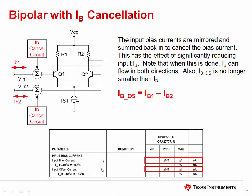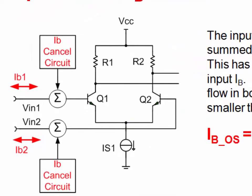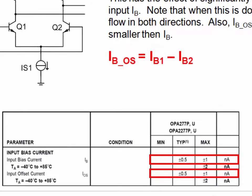Some precision bipolar op amps use a method called bias current cancellation in order to minimize bias current. This is done inside the op amp, so no external components are required. The amplifier simply behaves like a bipolar amplifier with very low bias current. Bias current cancellation is done by measuring the input bias current and summing in equal but opposite currents which cancel the bias current. This effectively takes an amplifier with hundreds of nanoamps of bias current down to single nanoamps. The OPA277 has a maximum input bias current of plus or minus one nanoamp. In this case, the bias current can have either polarity since the cancellation circuit is not perfect, and it's not known whether the polarity of the residual current will be positive or negative.